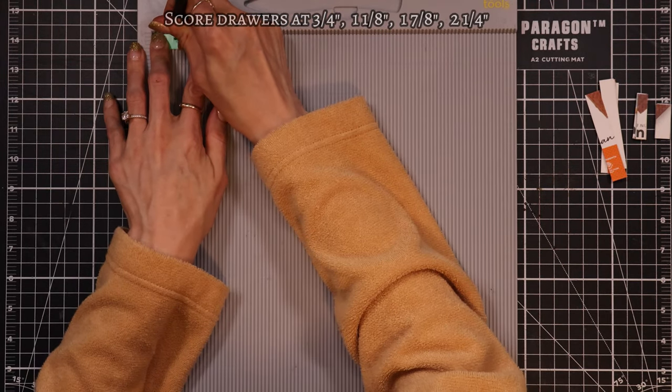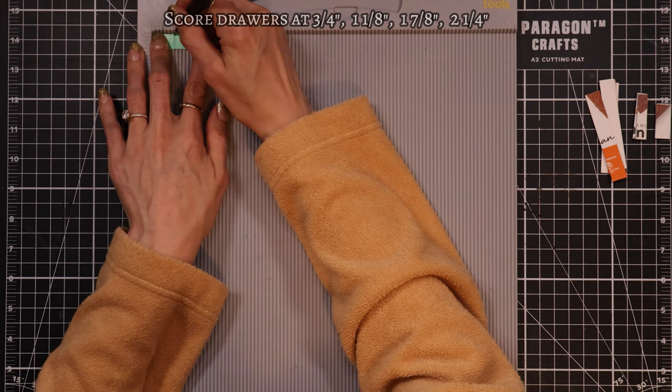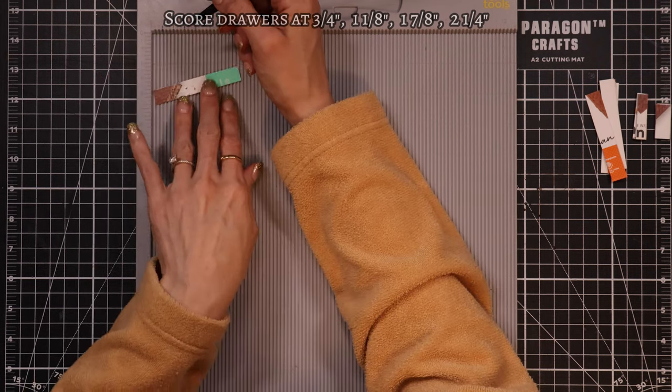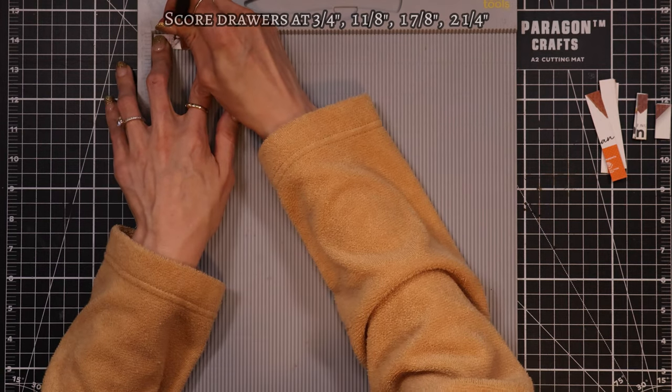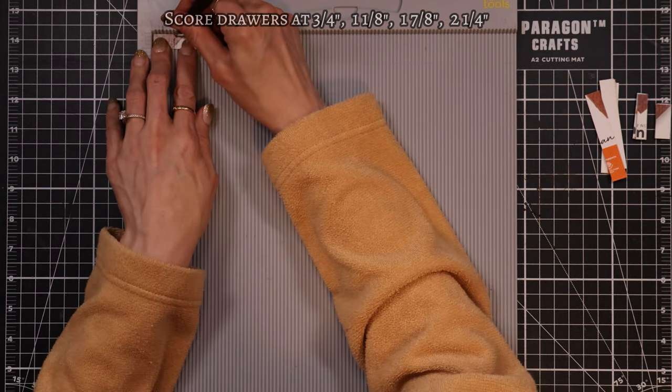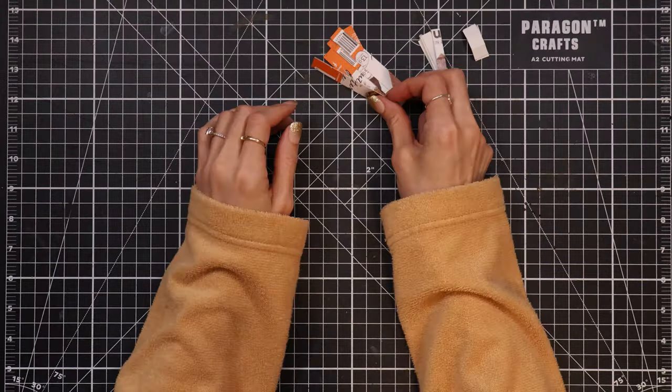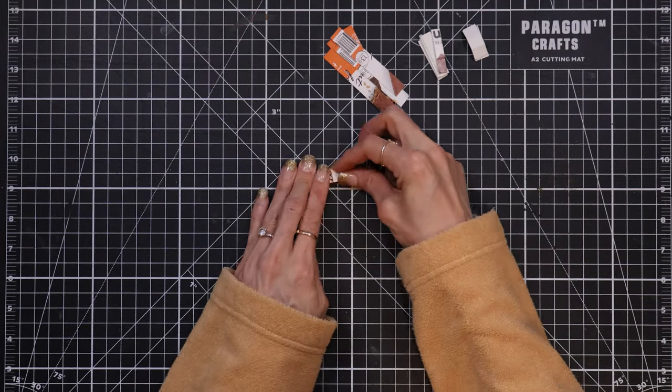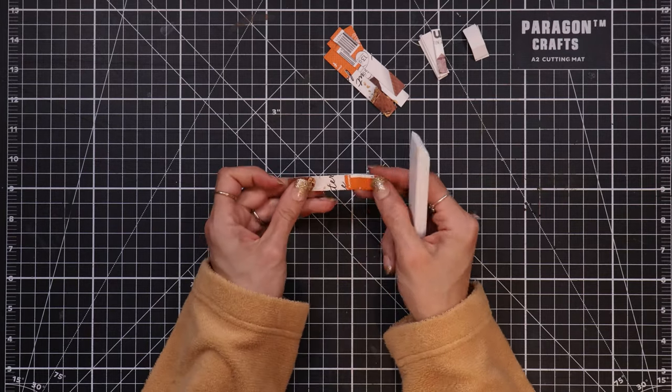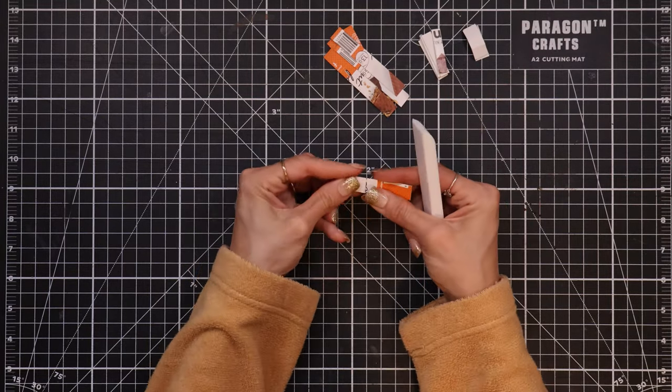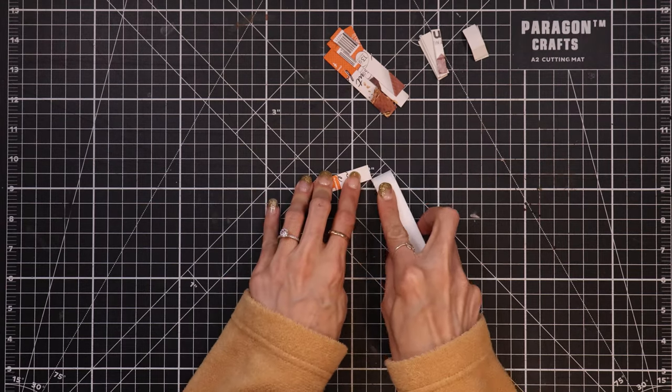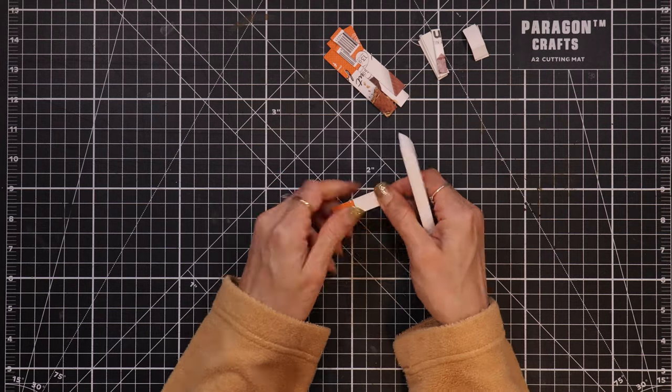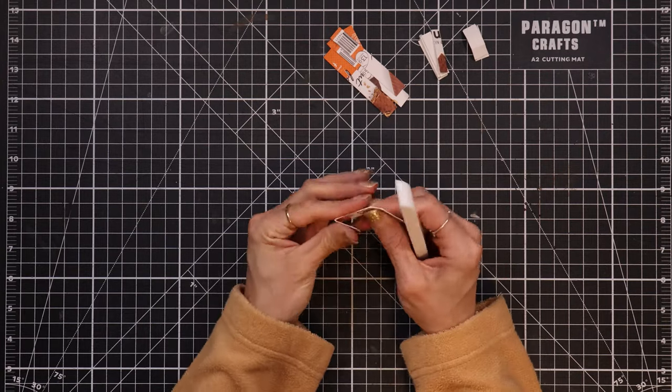I'm doing six drawers, so I cut out six pieces for the outside of the drawer and then six smaller pieces for the insert. Once they're all cut out, I score the outside of the drawers at three quarters of an inch, one and one eighth inch, one and seven eighths inch, and two and a quarter inch. I make sure to score them with the side I want on the inside facing up for a cleaner, less bulky fold. I use a bone folder to help get a nice crease, but just pinching them really well would have been fine. I make sure before I crease them that the flap lines up straight with the rest of the strip so it doesn't end up all wonky.